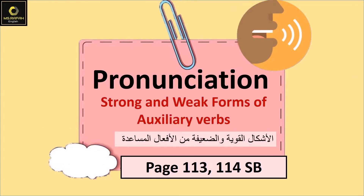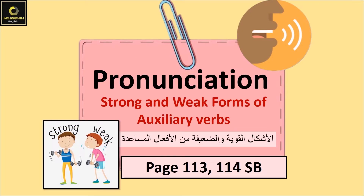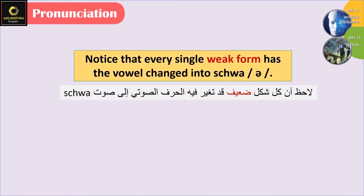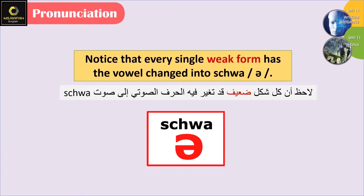Pronunciation: strong and weak forms of auxiliary verbs. Notice that every single weak form has the vowel changed into schwa. The schwa is the most commonly used sound in English — most words contain the schwa sound. We use weak forms in everyday conversations. As for the strong form, we use it when the word stands alone or when we want to emphasize it.